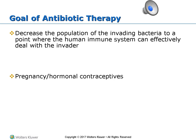The goal of antibiotic therapy is to decrease the population of the invading bacteria to a point where the human immune system can effectively deal with the invader. Antibiotics are sometimes given in combination because they are synergistic — they combine effects which are greater together than individually, such as Bactrim DS. With pregnant women, antibiotics shouldn't be taken unless the benefits outweigh the risk. Antibiotics can also interfere with the effectiveness of hormonal contraceptives, which leads to unplanned pregnancies.